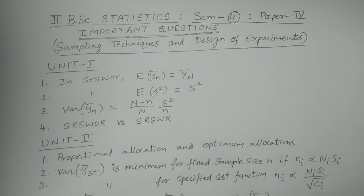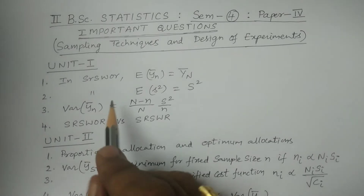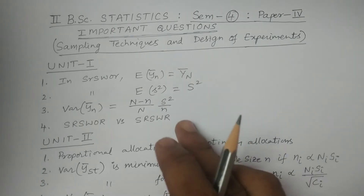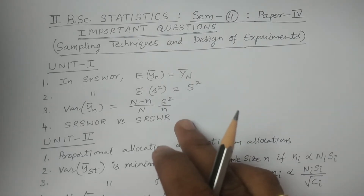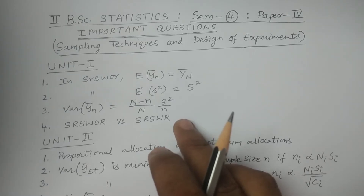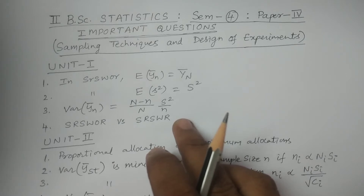First, Unit 1. Simple random sampling — with replacement and without replacement — two techniques. It is very simple. You need to do the problems. This is very easy, for 15 marks or 10 marks. Section 1, Section 2 — big questions, essay questions.